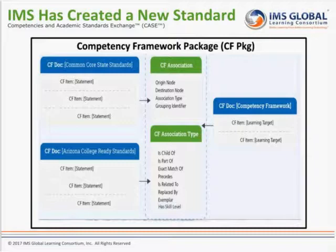The idea of CASE is to develop machine-readable competency and academic standards and linked data. There are three main object types: the competency framework document, which is like the cover page; the competency framework items, which are both the nodes in the taxonomies and the statements themselves; and competency framework associations, where relationships between competency framework items within a framework as well as across frameworks can be modeled.